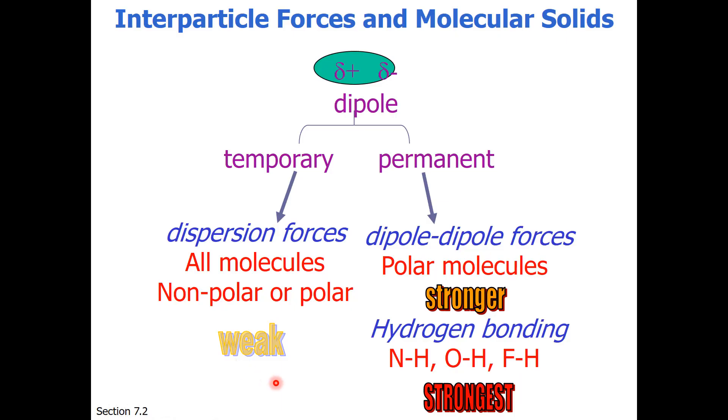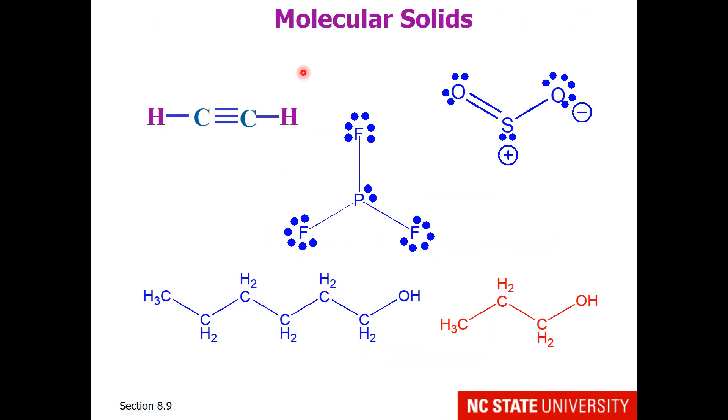The last type of solid I want to remind you of is molecular solids which are composed of nonmetals. Earlier lectures were devoted to discussing dispersion forces, dipole forces, and hydrogen bonding. These would be some examples of molecular solids. So in our next lecture in this series we'll be identifying different types of solids and trying to predict relative boiling and melting points.